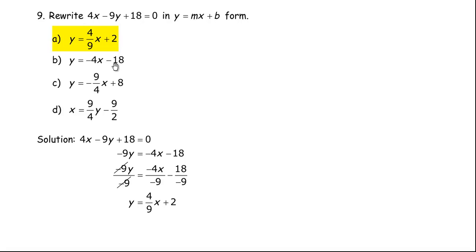I've rewritten this down here: 4x - 9y + 18 = 0. Now, I want to isolate for y, so I first want to isolate the -9y term, the term that has a y in it. So I would rearrange—